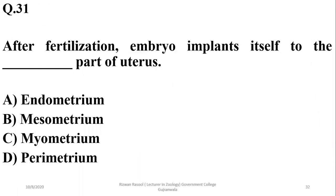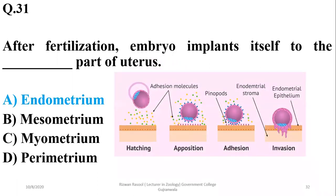Number thirty-one: after fertilization, the embryo implants itself into the endometrium, which is the major portion where the blastocyst of the human embryo is implanted, so the right option will be alpha.